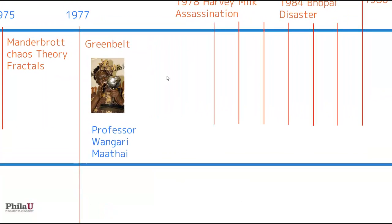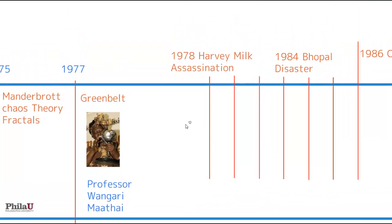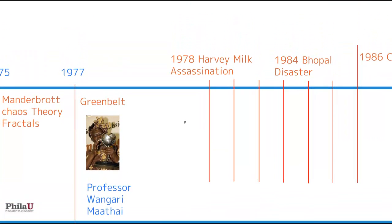We continue to see environmentalists from around the world. Professor Wangari in Africa built one of the first green belts in the world to prevent desertification — one of many examples we can find throughout history. Going back and forth between the ethical core and civil rights: Harvey Milk, the first openly gay mayor of San Francisco, was assassinated, continuing the pattern of assassination of leaders who are fighting for the rights of others.